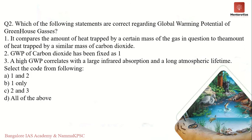Another exam question asks which statements are correct regarding global warming potential. Statement one: it compares the heat trapped by a certain mass of the gas to the heat trapped by a similar mass of carbon dioxide — correct, as demonstrated with methane's 21-molecule equivalence. Statement two: the global warming potential of carbon dioxide is fixed as one — correct, it is the baseline. Statement three: a high global warming potential correlates with large infrared absorption and a long atmospheric lifetime — correct, since both factors increase GWP. Therefore, all three statements are correct; the answer is D, all of the above.